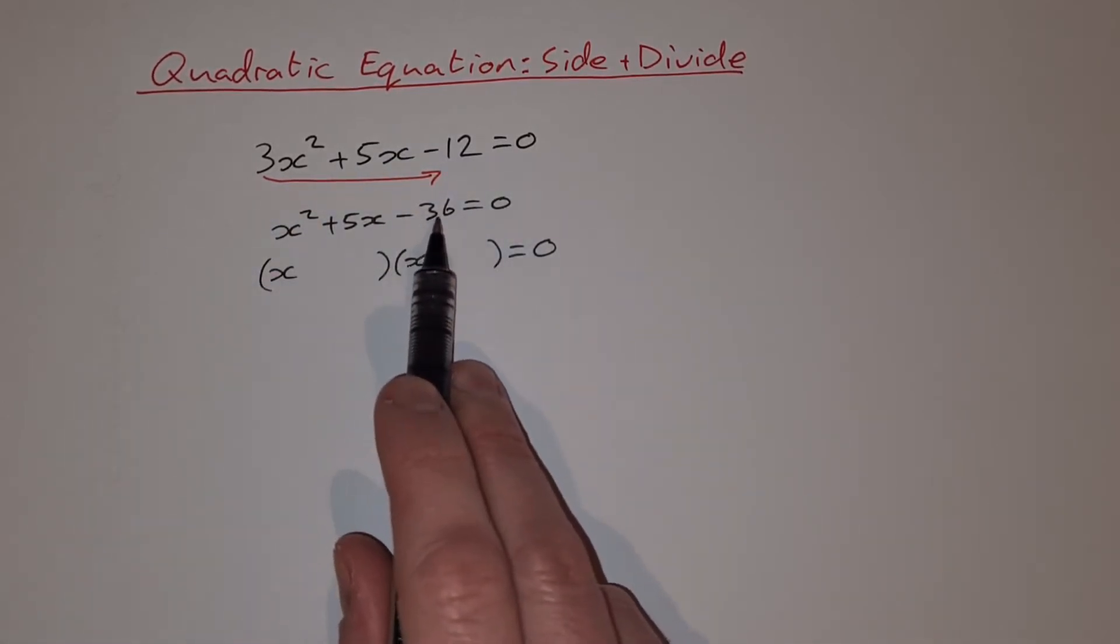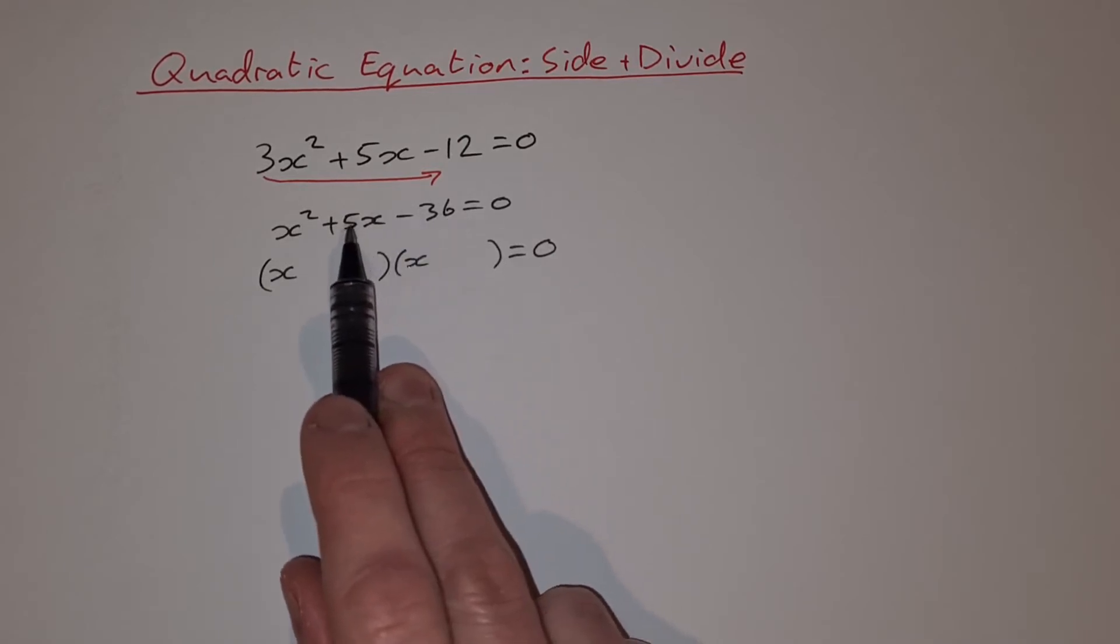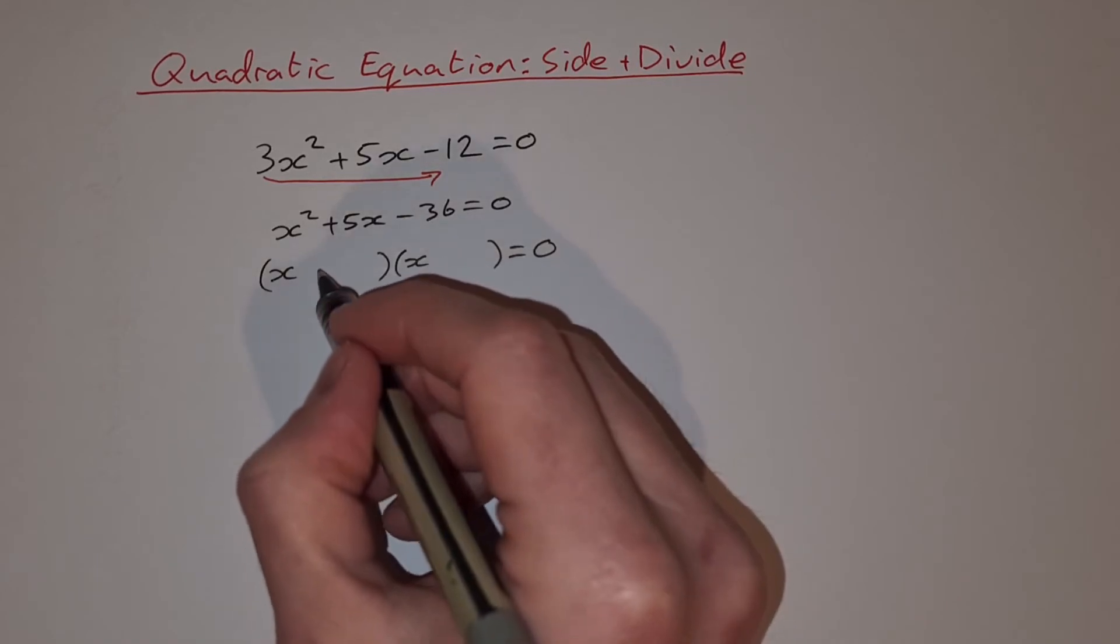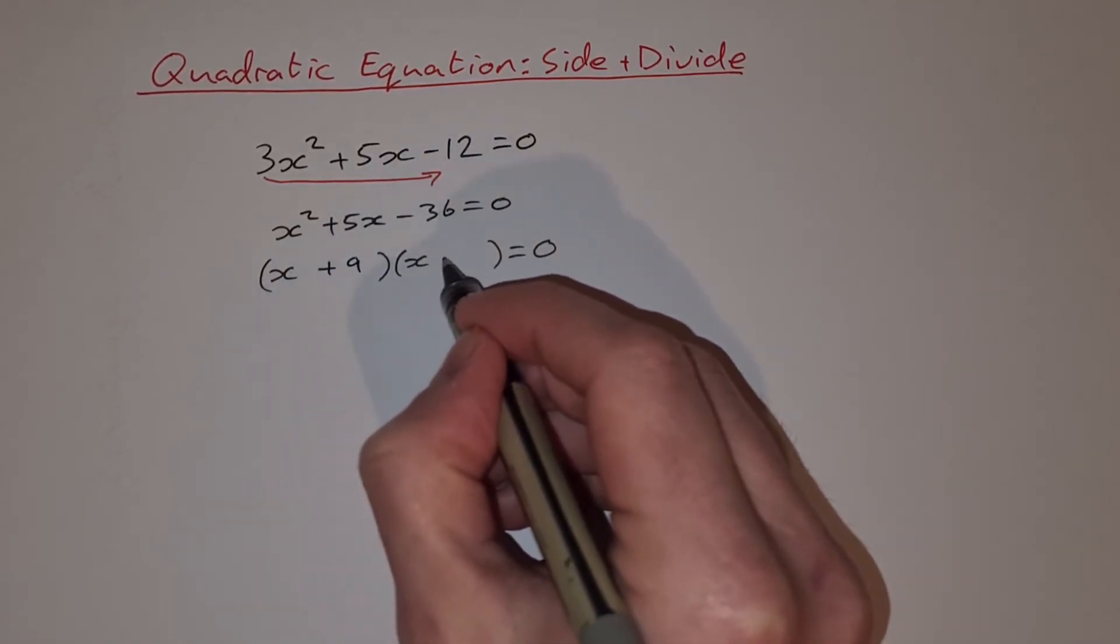And now we're looking for factors of minus 36 that add together to give you plus 5. Well, that's going to be plus 9 and minus 4.